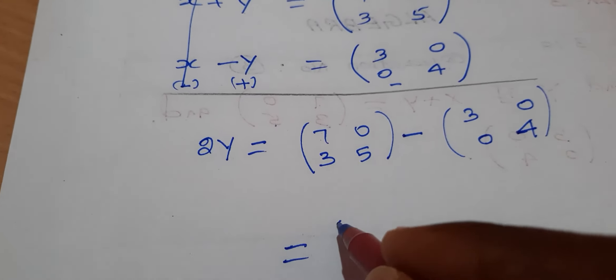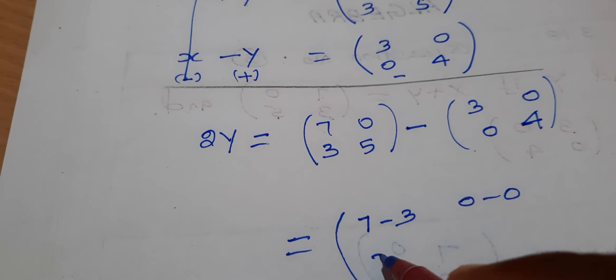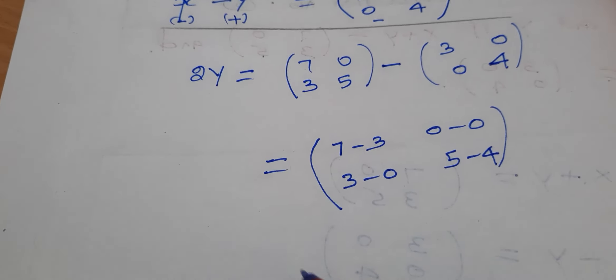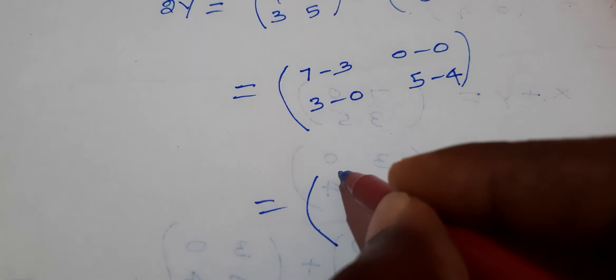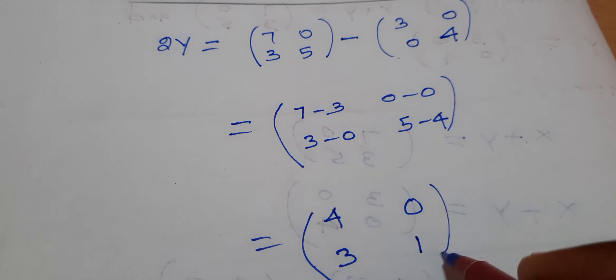Let's subtract. 7 minus 3, 0 minus 0, 3 minus 0, 5 minus 4. We get (4, 0; 3, 1).